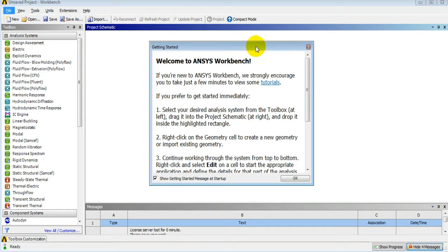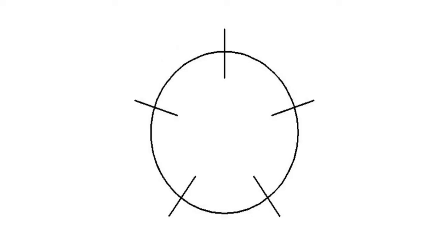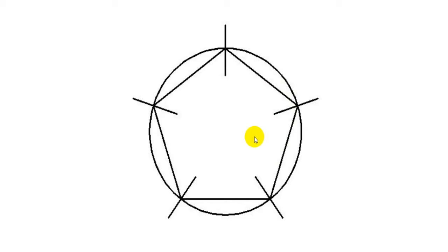Suppose you have to calculate the circumference of a circle without using a formula. Then you divide that circle into a number of segments and join these points to create lines. You can measure the length of each line and multiply by the number of lines to get the circumference — but the answer will be approximate. So in ANSYS, or in finite element analysis, you will get approximate results only.